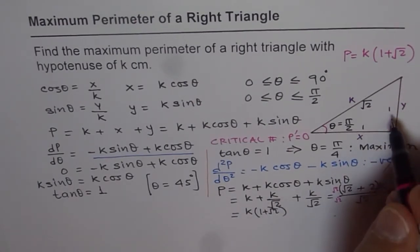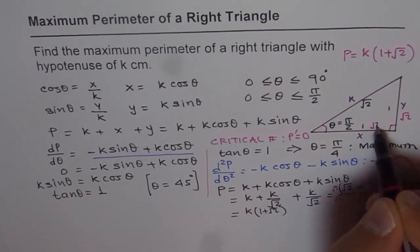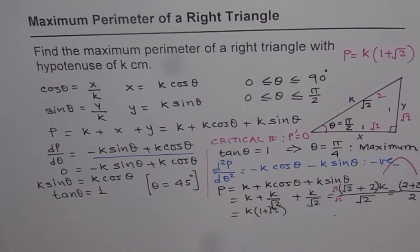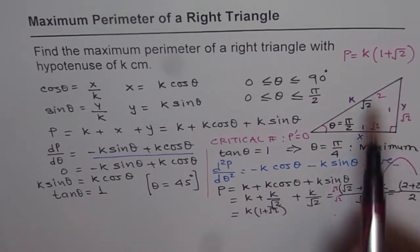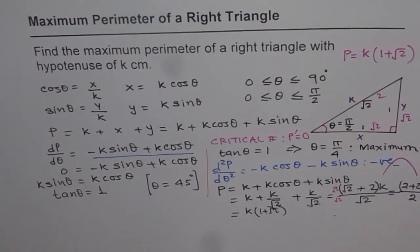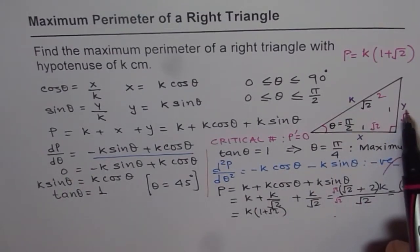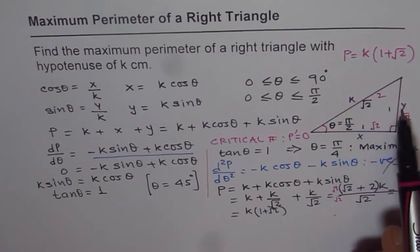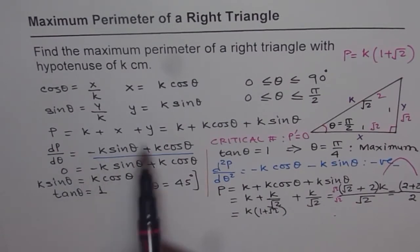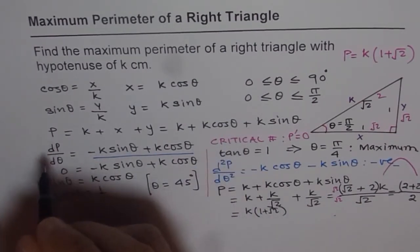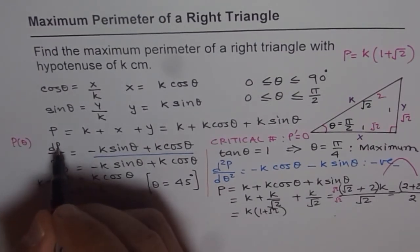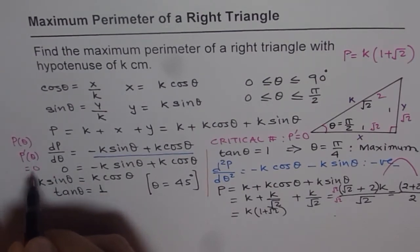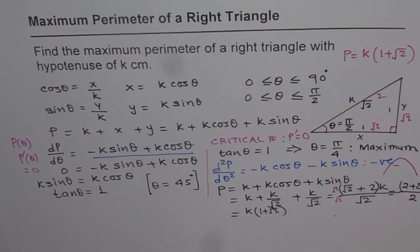To summarize the method: write perimeter as k plus x plus y, express x as k·cos θ and y as k·sin θ, giving perimeter as a function of theta. Find the derivative dP/dθ, equate it to 0 to get the critical number θ = π/4 (45 degrees), then verify it is a maximum. Substituting back gives the maximum perimeter as k(1 + √2).